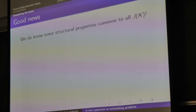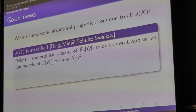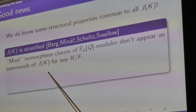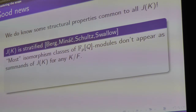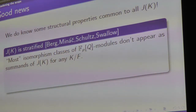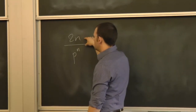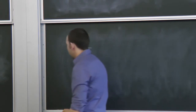It turns out that the structure of J of K has been computed for all K's, and there are some unexpected things that show up. If you look at the number of isomorphism classes of indecomposable FpQ modules, there are exactly p to the n of them. However, if you look at the module structure for any J of K, there are at most n plus 1 isomorphism classes that appear. And looking across all fields, at most 2n isomorphism classes can show up — a tiny proportion of the p to the n possibilities.